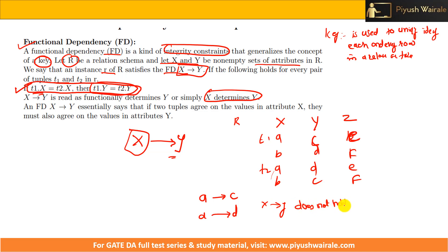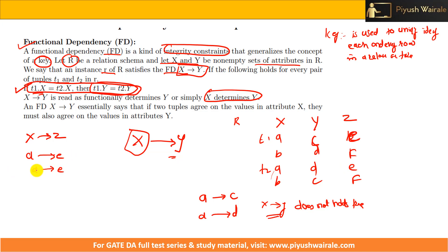Now checking X→Z: when X equals 'a', both t1 and t2 give Z equals 'e'. For X equals 'b', both tuples give Z equals 'f'. Since for all unique values of X we get the same Z value, we can say X→Z holds true on this relation R.